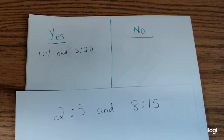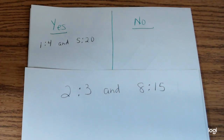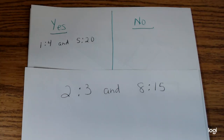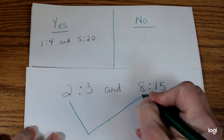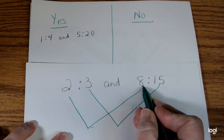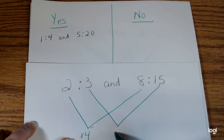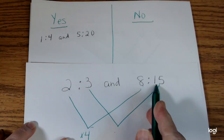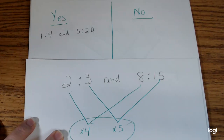Let's try another one: 2 to 3 and 8 to 15. We're going to take the first number of the ratio and the second number. 2 times what equals 8? 2 times 4. But 3 times 4 is not 15 — that would be 3 times 5. These numbers are not the same, so this is going to be on my no side.